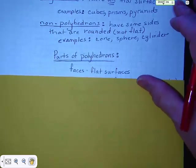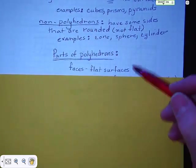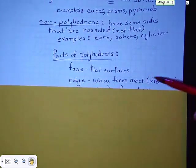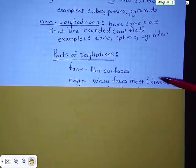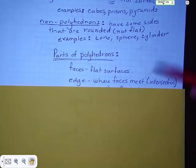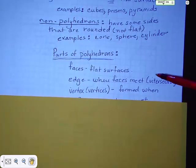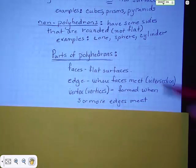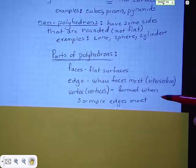Now, parts of polyhedrons. They have faces. That's the flat surfaces. They have edges where faces meet. That's an intersecting. They have vertices. When three or more edges meet together, you might think of them as a corner.